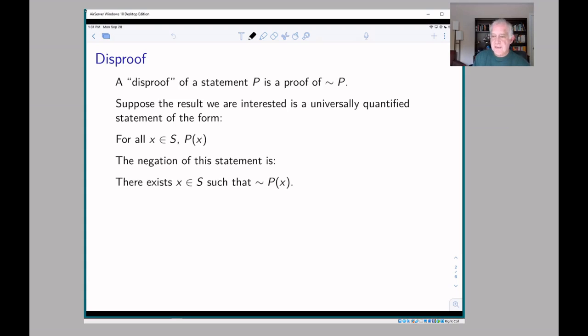For example, if we have a statement which is a universally quantified statement of the form for all x in a set S, the open sentence P(x) is true, then the negation of that is there exists an x in the set S for which the property is not true, or for which not of the property is true.